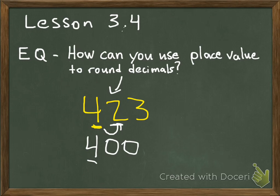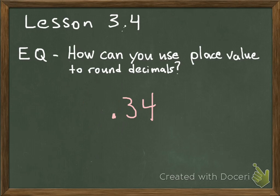Now, if we understand those principles, we're going to be able to round decimals, because it's just the same steps involved. For example, the decimal we have here is 34 hundredths.